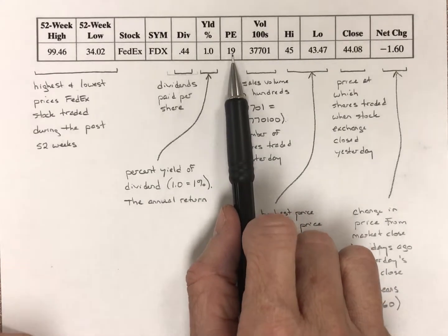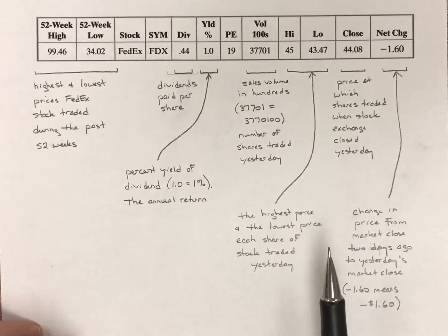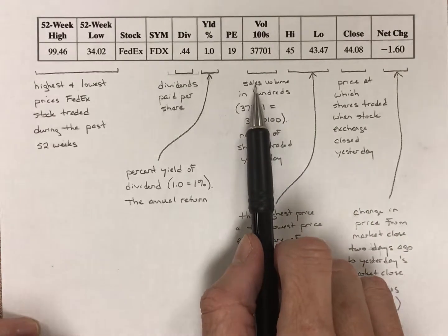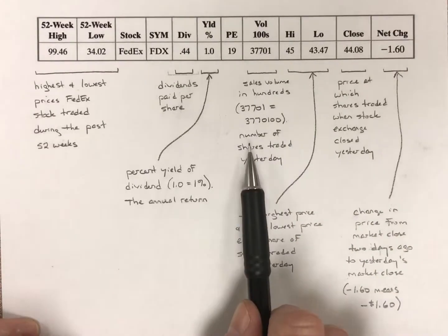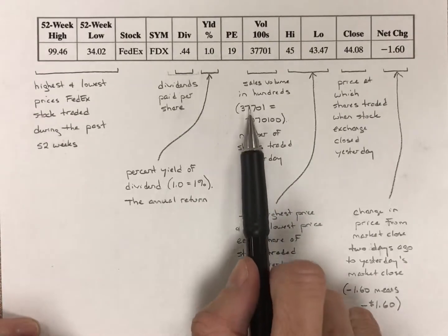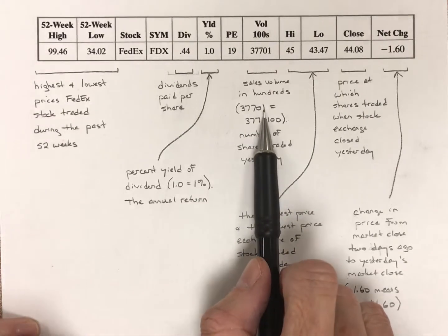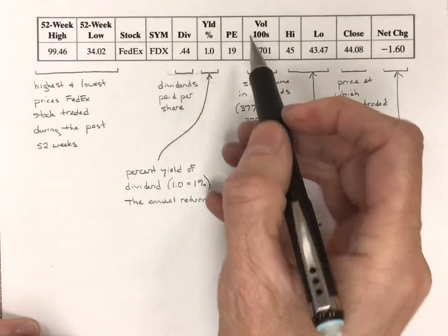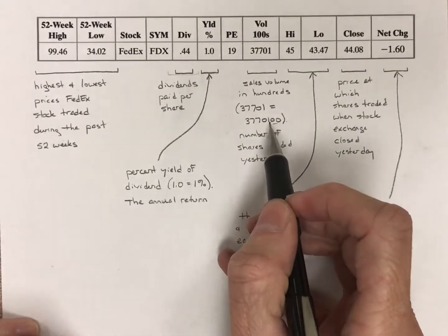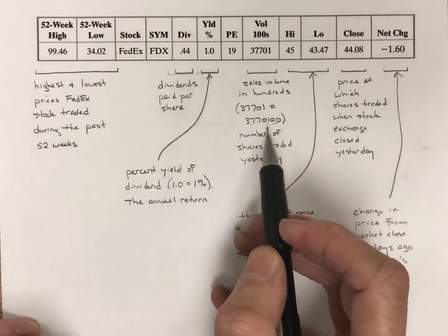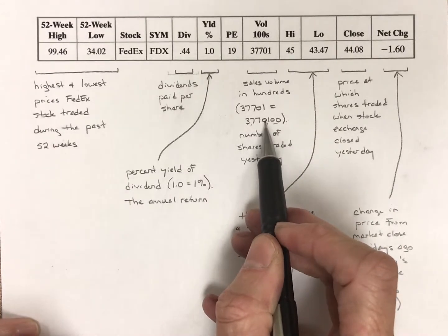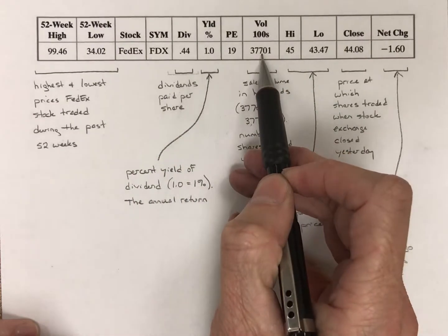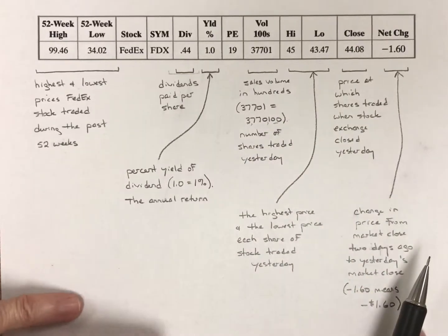P.E. is price-to-earnings ratio. Don't worry about that too much. Volume in hundreds, this tells you the sales volume in hundreds that day, the number of shares traded yesterday. And so 37,701 in hundreds means you have 37,70100. So hundreds up here, you've got to add two more zeros on here. And this tells me that we traded 3,770,100 shares of FedEx stock yesterday. But it's written this way as in hundreds.